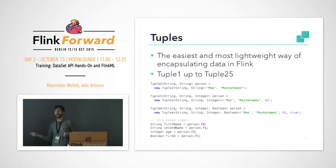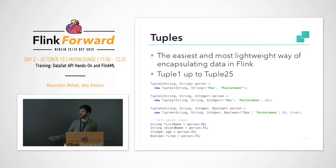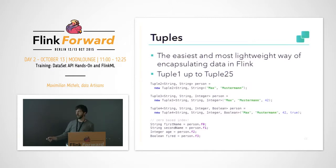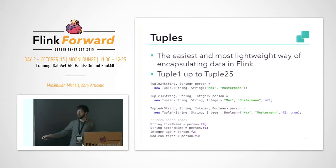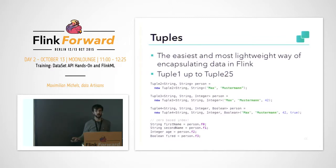A Tuple is kind of the standard data type if you transform data using the DataSet API. It can store one or up to 25 values in a record. Like if you want Tuple2, you say Tuple2 and specify the type of each element in the tuple. If you want to get data out of the tuple, you select the first field, second field — and remember, it starts with zero, not one. That might be a bit tricky in the beginning.